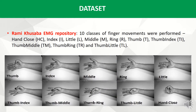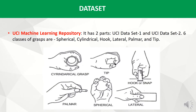The datasets used are shown here. The first dataset is known as the Rami Kushaba EMG repository, where 10 classes of finger movements were performed. The second dataset is the UCI Machine Learning Repository, which has two parts — dataset 1 and dataset 2 — where six classes of grasps were performed.